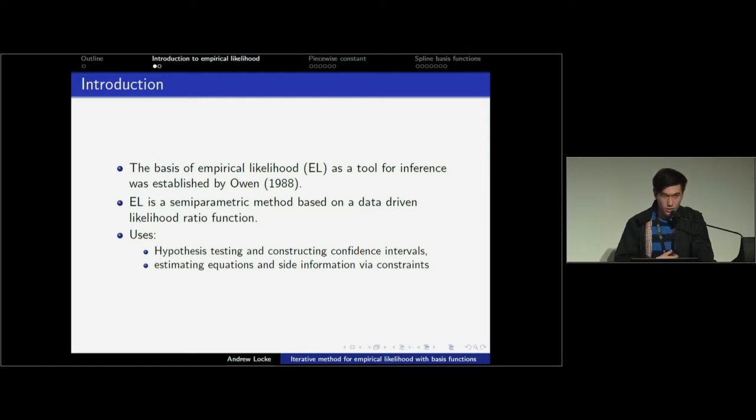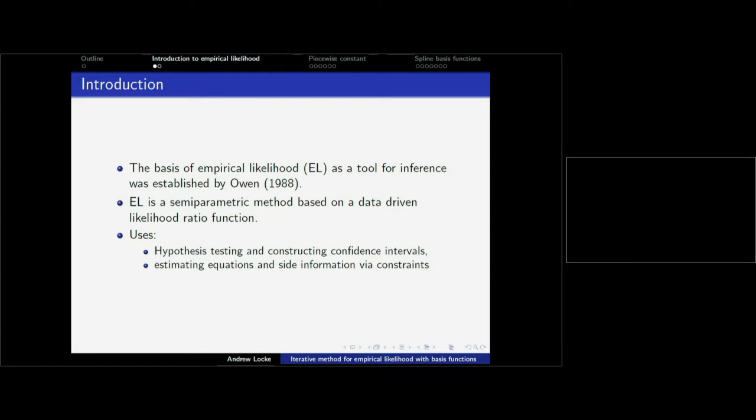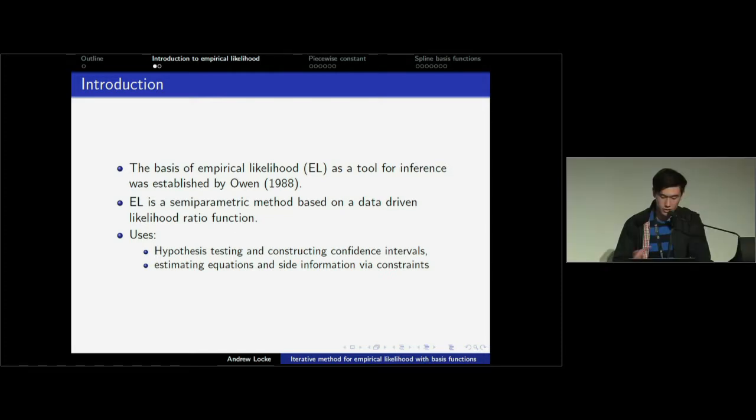The basis of empirical likelihood was established by Owen in 1988. The main idea is that we can use a kind of semi-parametric or non-parametric method which allows us to perform hypothesis testing without needing to assume the distribution of the data. We can also extend this to other areas. If we do have additional ideas about the data, we can include that information using estimating equations or side constraints. It's a very powerful technique.